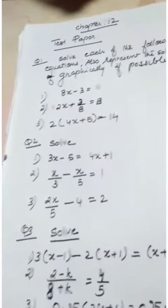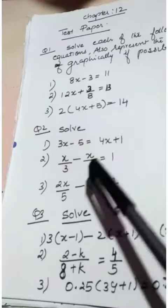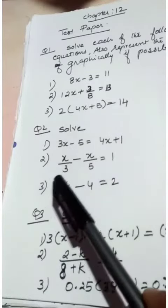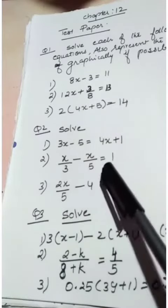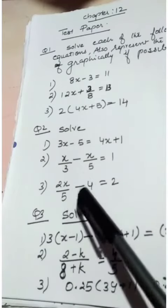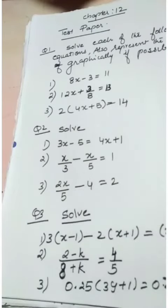Next, question number 2. Solve: 1) 3x minus 5 equal to 4x plus 1. 2) x by 3 minus x by 5 equal to 1. 3) 2x by 5 minus 4 equal to 2.